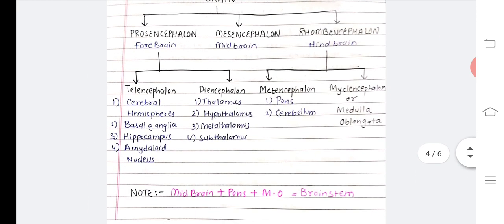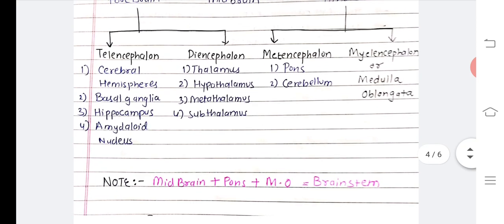The midbrain, pons, and medulla oblongata together form our brain stem.